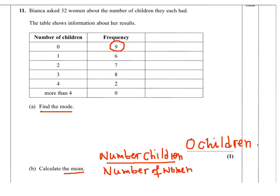First of all there are 9 women with 0 children, so the number of children here will be 9 times 0, so that's 0. There are 6 women with 1 child each, so it's 6 times 1, so the total number of children is 6. There are 7 women with 2 children each, so it's 7 times 2, so in total for these 7 women there are 14 children.